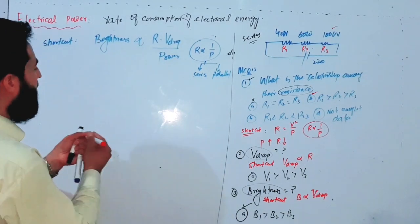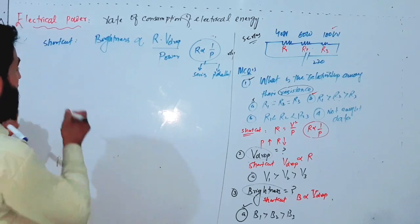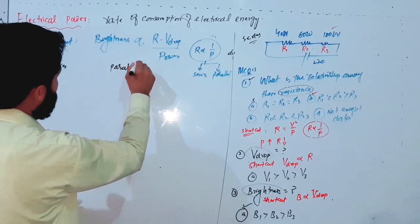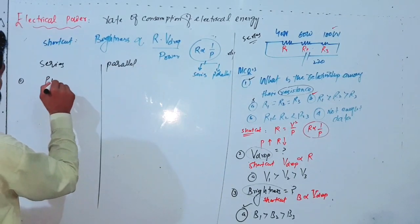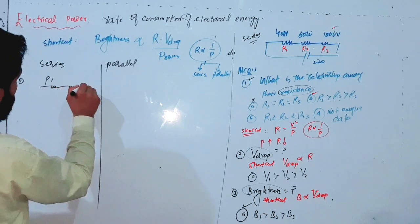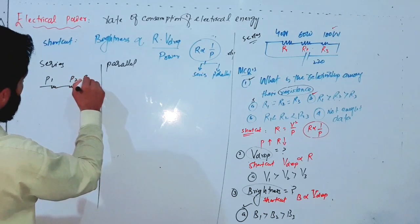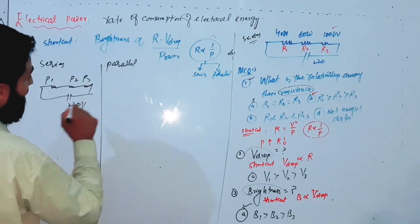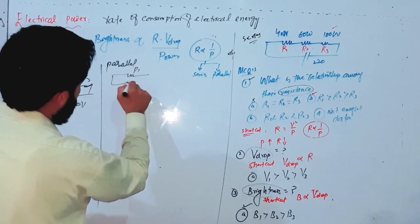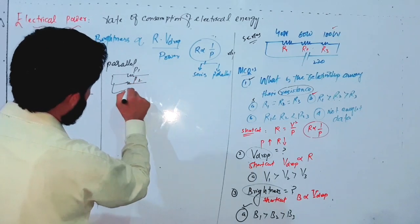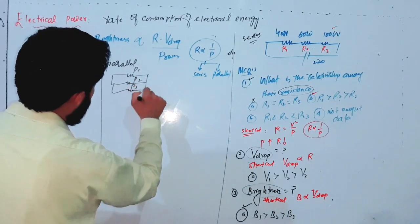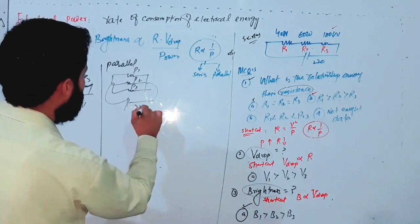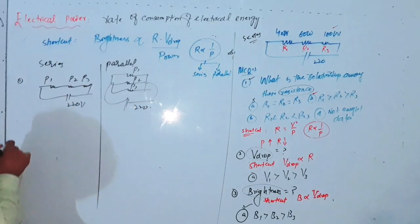Now let us look at the parallel combination. Whenever each resistor is connected directly to the potential difference source — end to end — this is called a parallel combination. For example, if we connect the 40W, 60W, and 100W bulbs in parallel across 220 volts, what is the equivalent power?